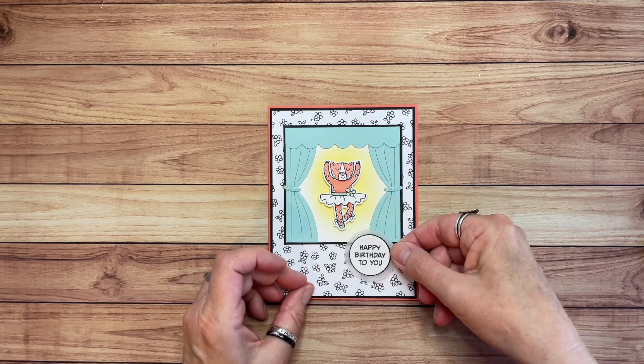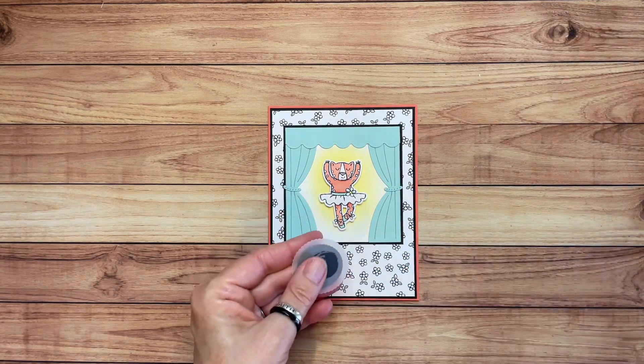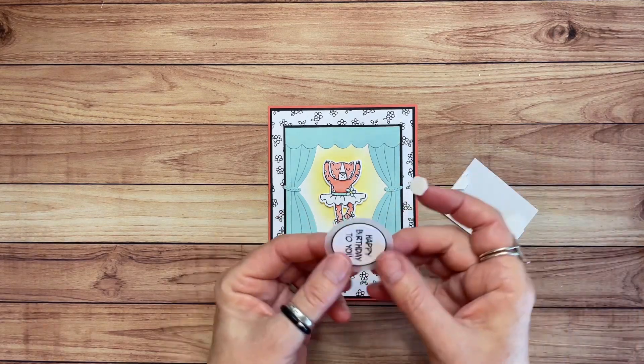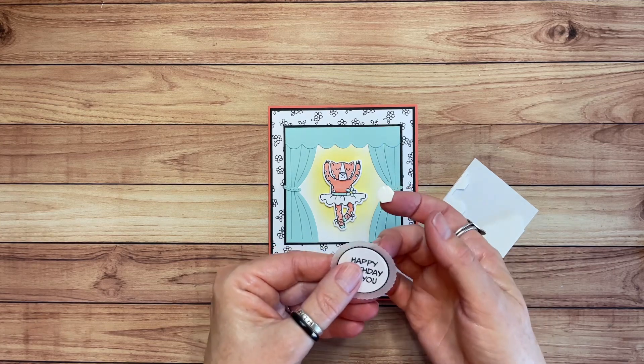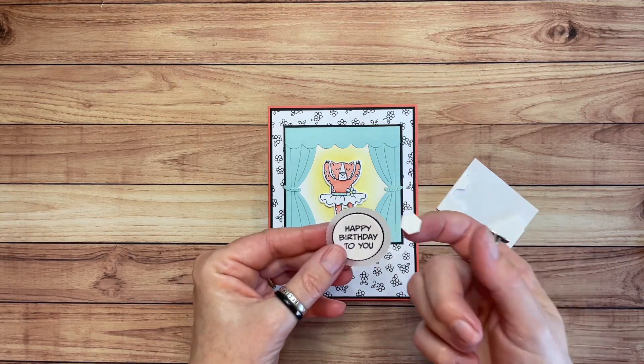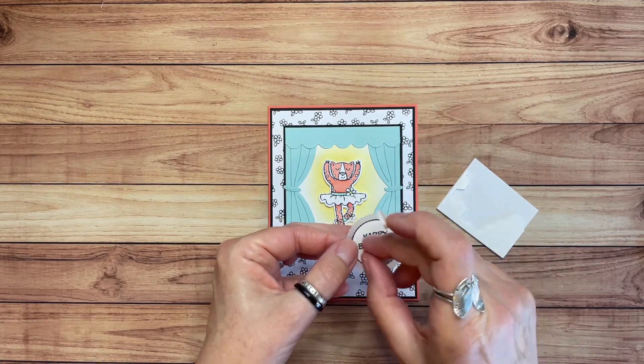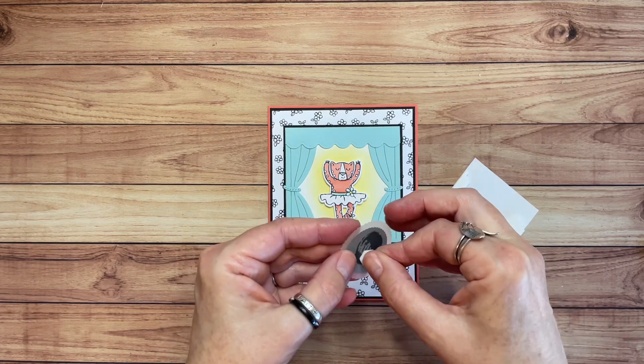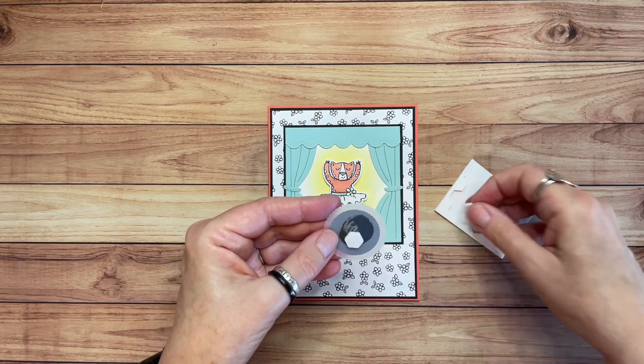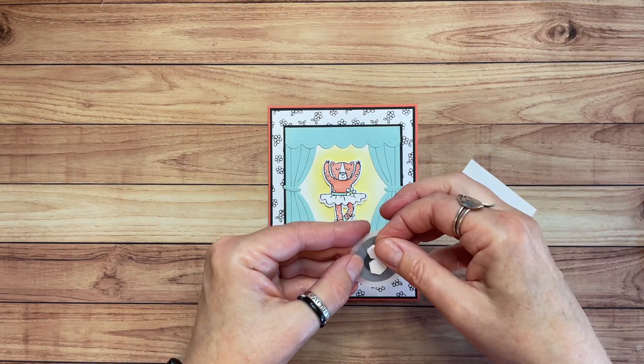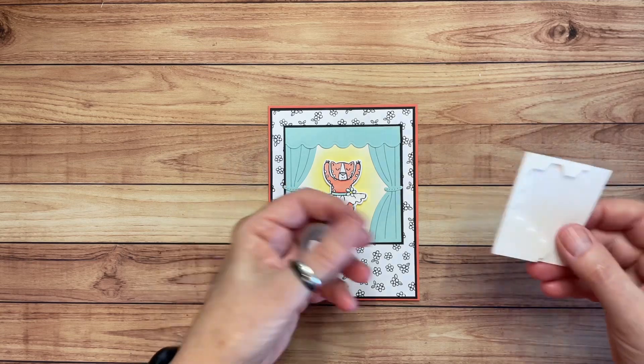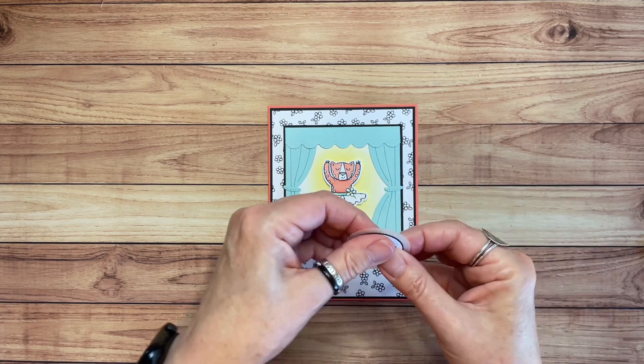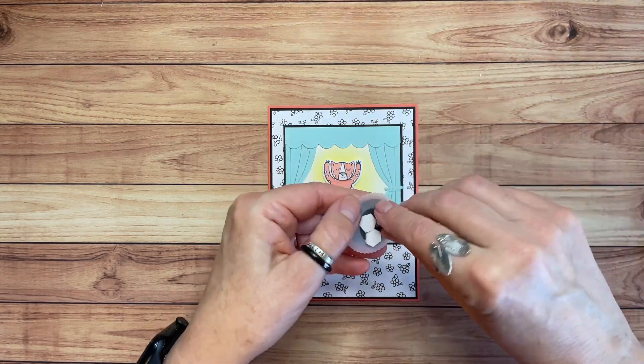Now, we need to put our sentiment on there. Let me grab some more dimensionals. And when you're working with vellum, you always want to make sure that you're not putting something on the back that's going to show through. So I'm going to be careful and keep my dimensionals in this area so they're not showing through on the vellum. I probably could have used small ones, but I'm just going to squeeze these in here. And then we'll put this on. And then I have a little bling. I want to put a little bling on it. So this is going to go right here.